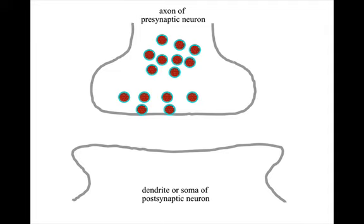The vesicles are distributed in the synapse, but some are close to the synaptic cleft, and a few are actually docked on the neuron membrane right next to the cleft.